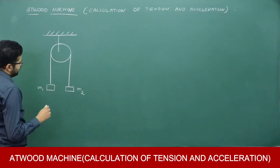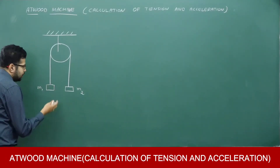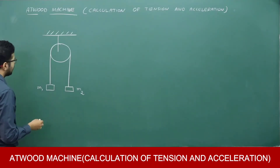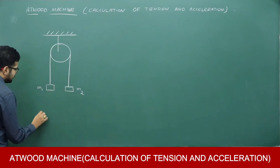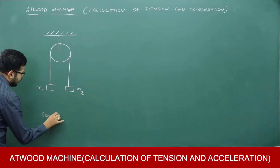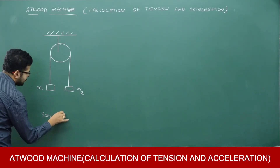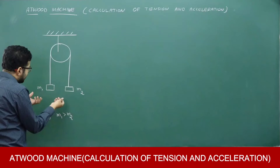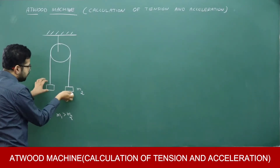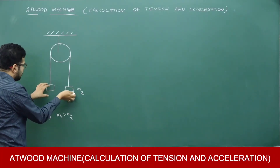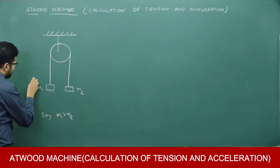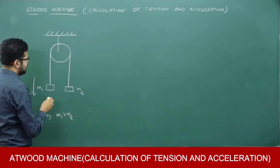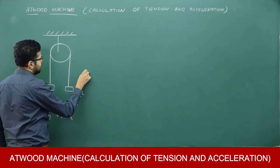We need to calculate the acceleration at which the masses are moving and the tension in the string. Say M1 is greater than M2. If M1 is greater, its weight will be more and M2's weight will be less. So M1 will come down and M2 will go up — M1 starts accelerating downwards and M2 starts accelerating upwards.